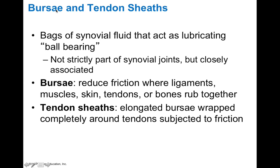We also find bursa and tendon sheaths, which are interesting examples of synovial membrane found outside of joints. Think of a bursa as a bag of synovial fluid that lubricates like a ball bearing — it's not strictly part of a synovial joint but is usually closely associated. You'd find a bursa surrounding muscles, between a tendon and skin, or between two bones near a joint, providing additional lubrication. Tendon sheaths are elongated bursa that wrap completely around tendons subjected to a lot of friction, like the wrist tendons.